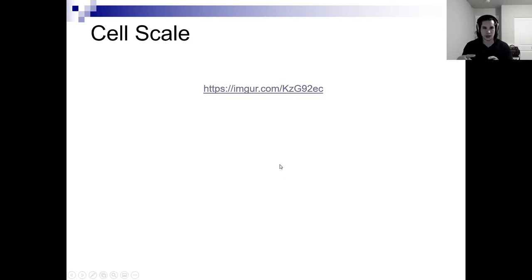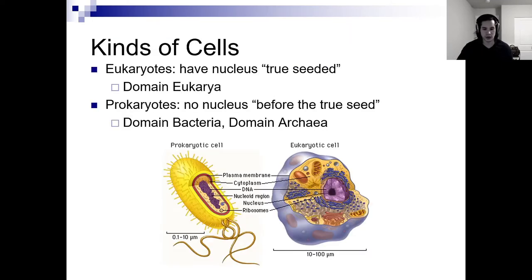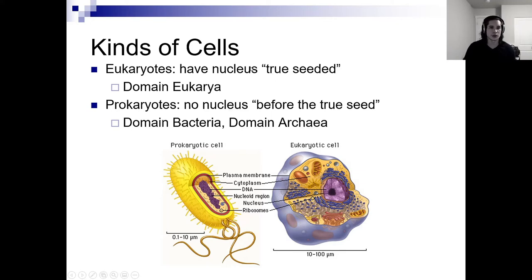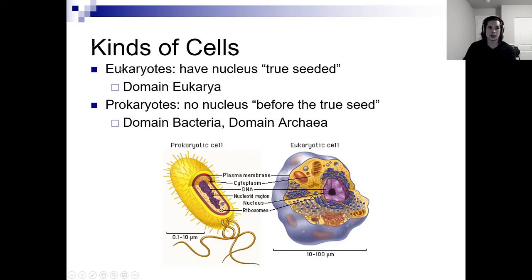It shows the relative size of things from viruses up to eukaryotic cells. Different kinds of cells: we got eukaryotes, which have a nucleus and typically have organelles, and then prokaryotes, which have no nucleus. Two different types of prokaryotic cells are bacteria and archaea, and eukaryotes have eukaryotic type cells.